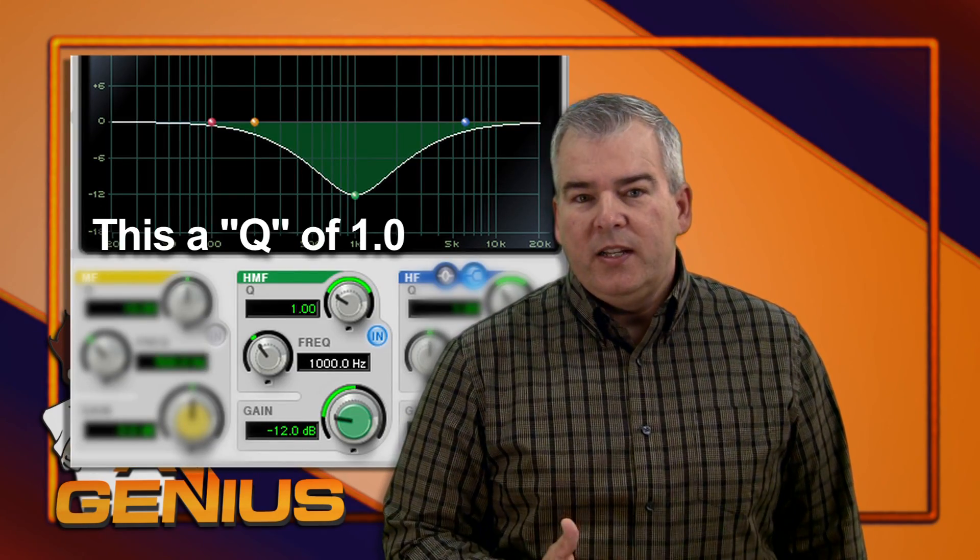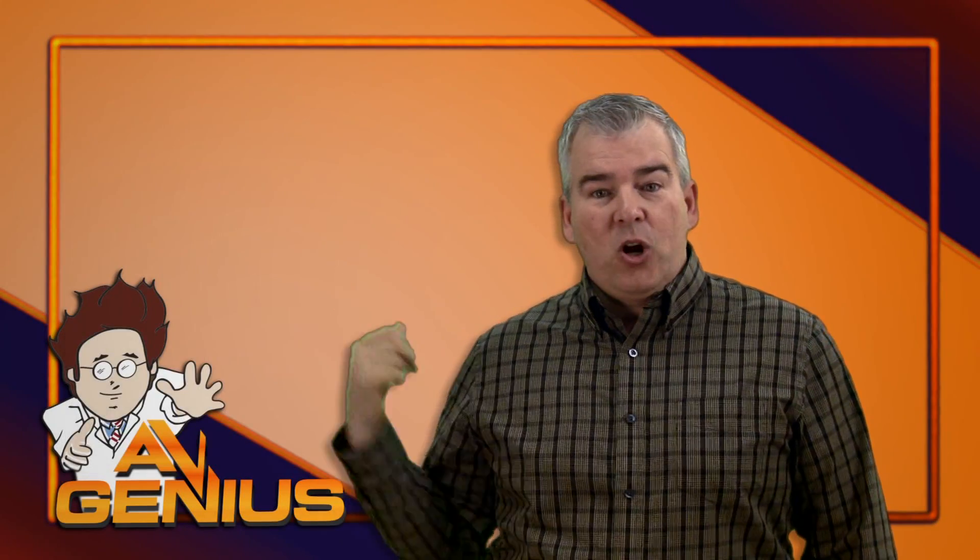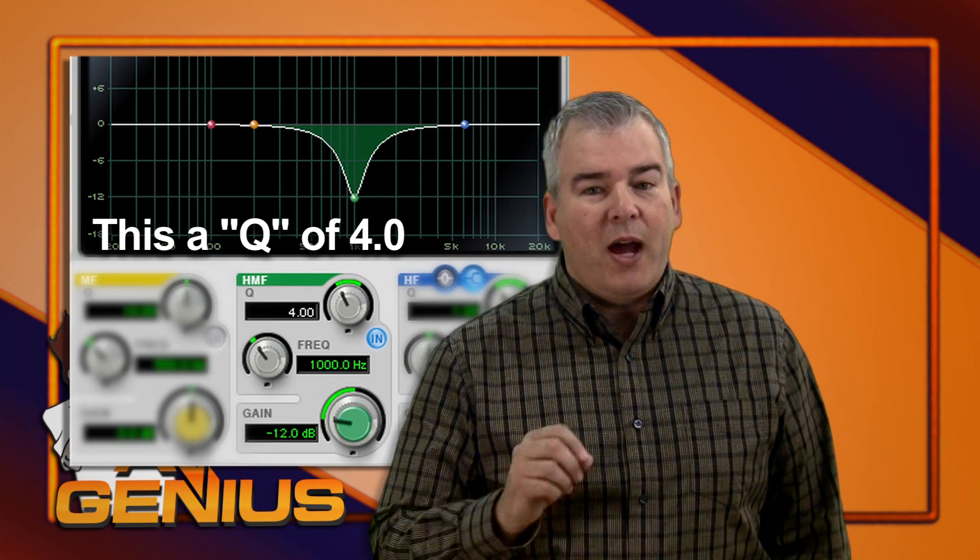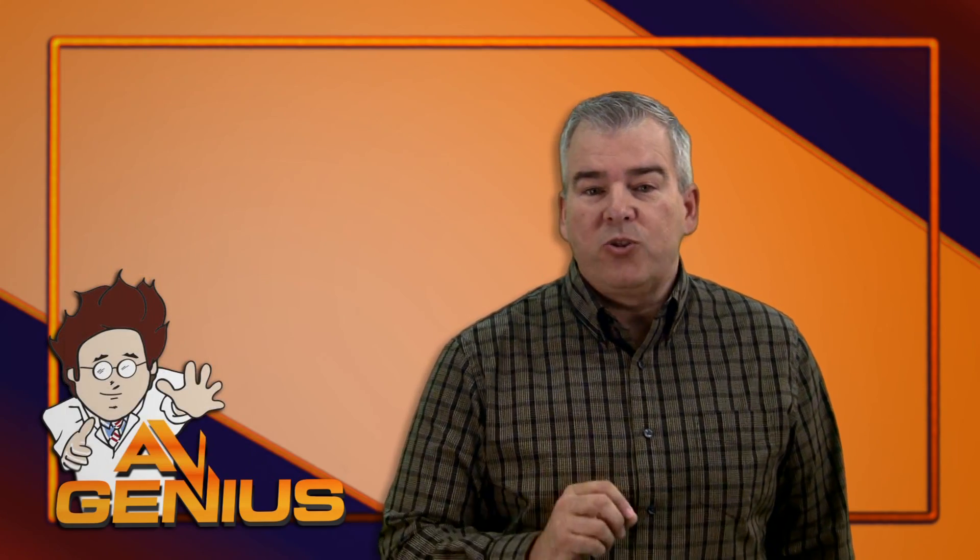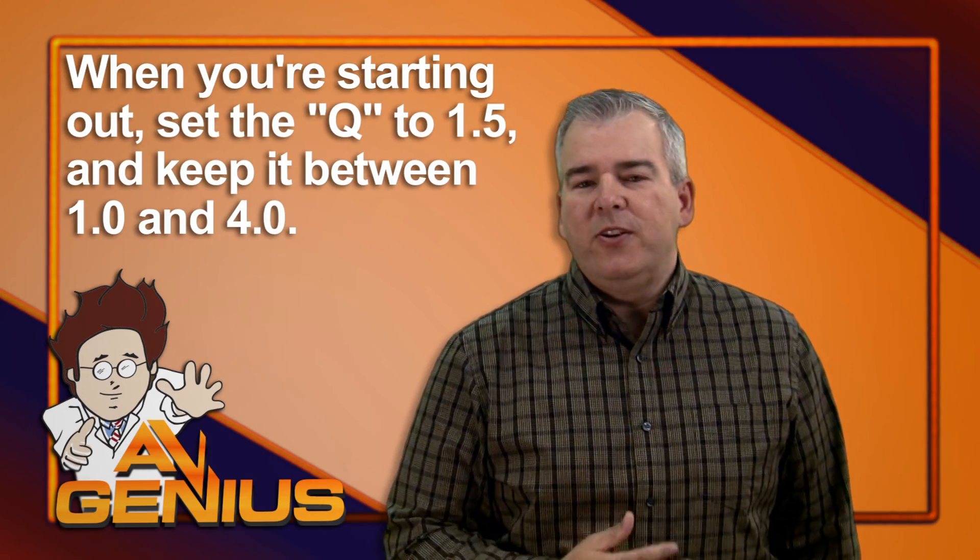If the Q is much less than 1, you start affecting a huge range of frequencies. If it's any larger than 4, you're starting to perform surgery on a very narrow frequency range. So I would suggest setting your Q control to 1.5 as a good starting point, until you really understand what you're doing.